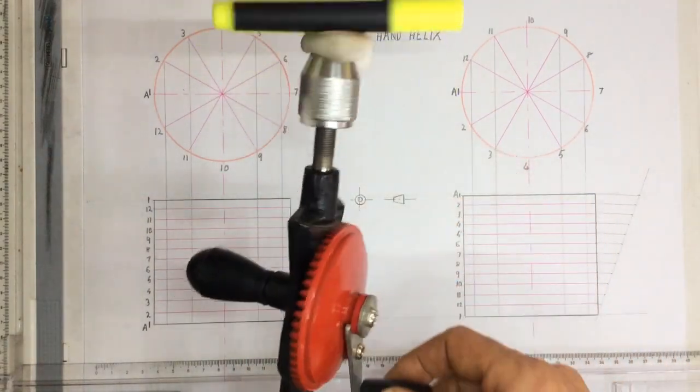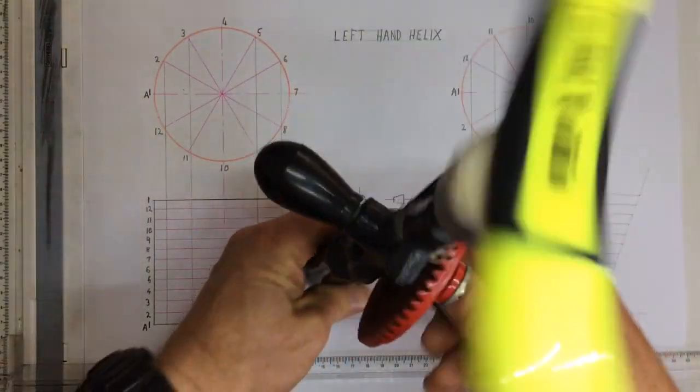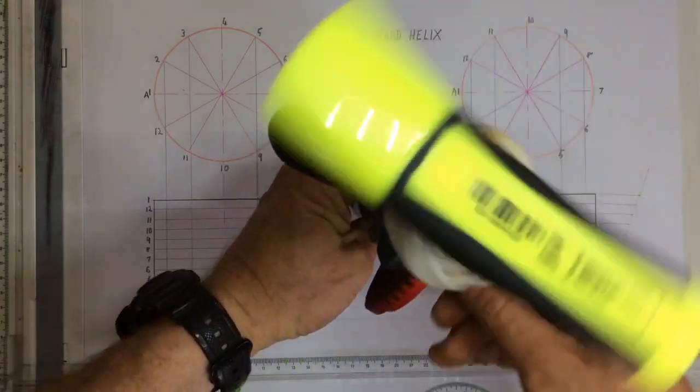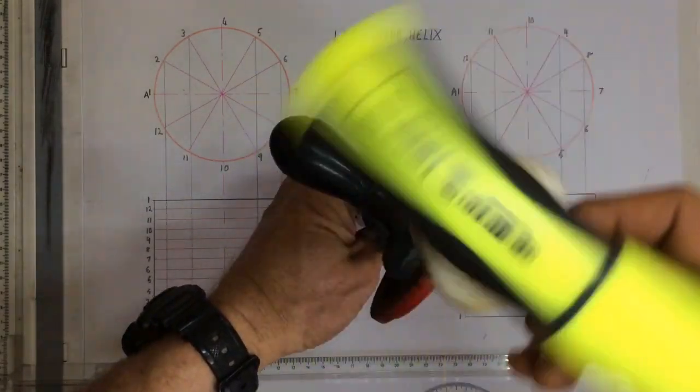I'm going to continue rotating it in the same direction, continuing rotating it. Note I've now come to the top and you'll see that the pen is now going in an anti-clockwise direction.